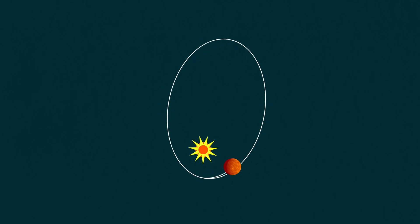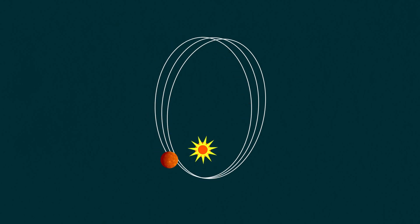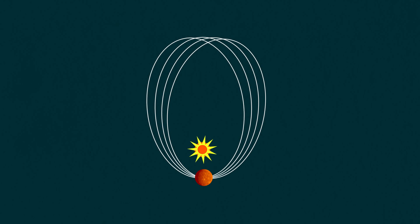Newton's mass and distance based understanding of gravitation is really useful for stuff like predicting the existence of Uranus based on the movement of Neptune. But it doesn't explain everything, like Mercury's orbit. The trouble with Mercury is that the point where it's closest to the sun — its perihelion — isn't where Newton's law predicts.